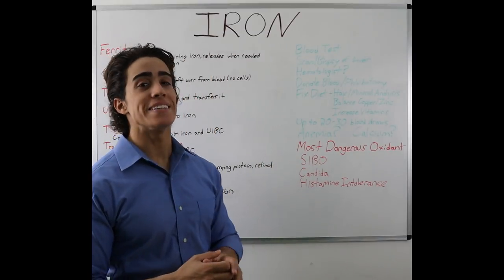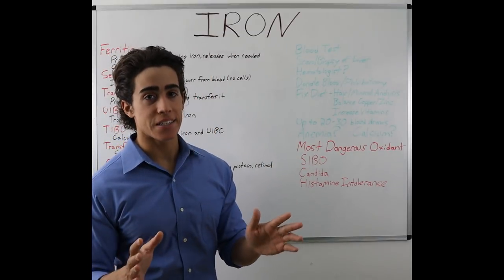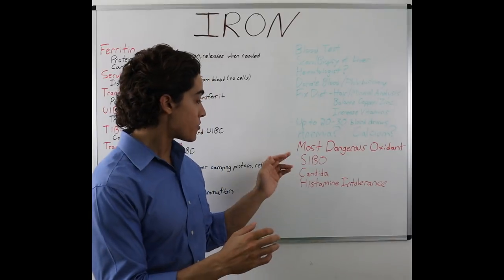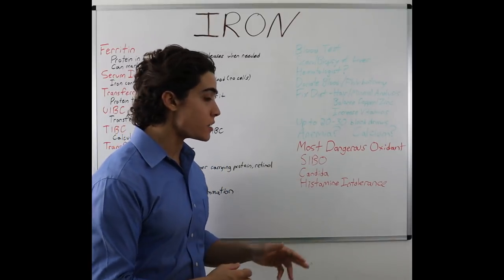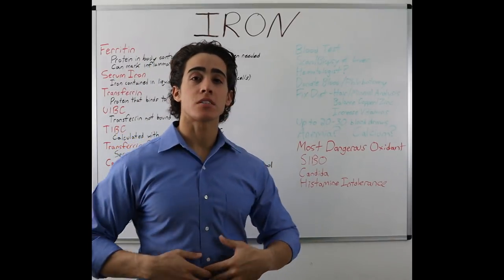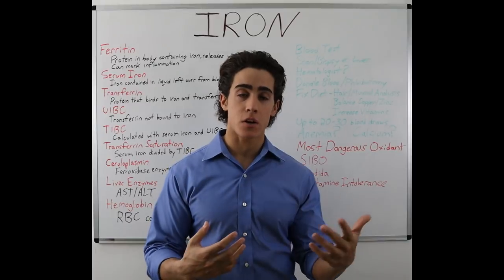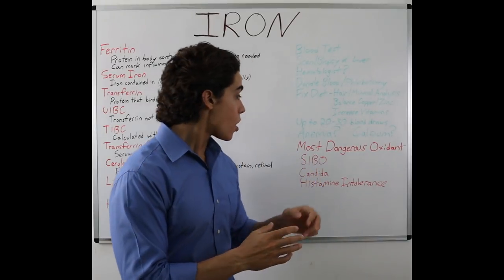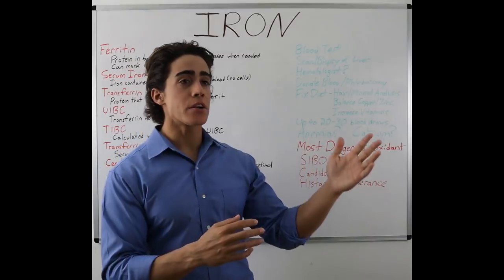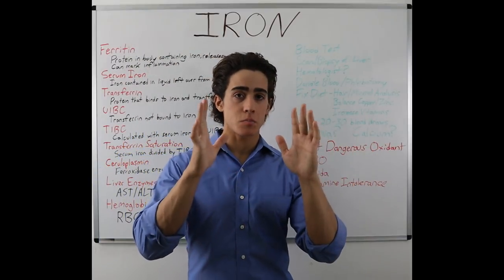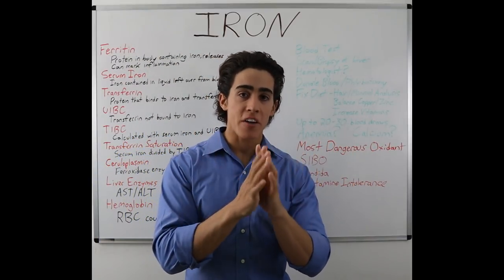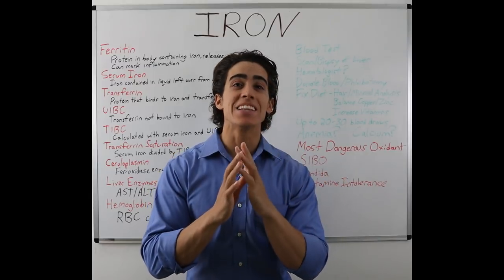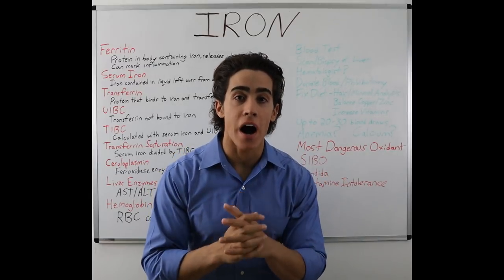Iron is the most dangerous oxidant — you don't want anything to do with excess iron. Things like SIBO — small intestinal bacterial overgrowth — and candida, small intestinal fungal overgrowth, which many people suffer from, are caused by iron. Iron is a building block of life: pathogenic bacteria and fungus love iron.